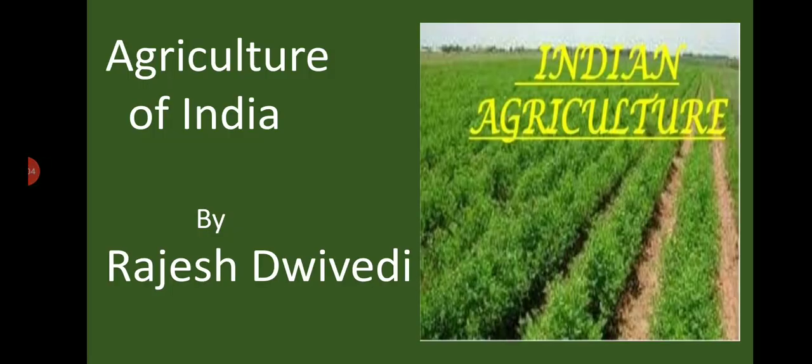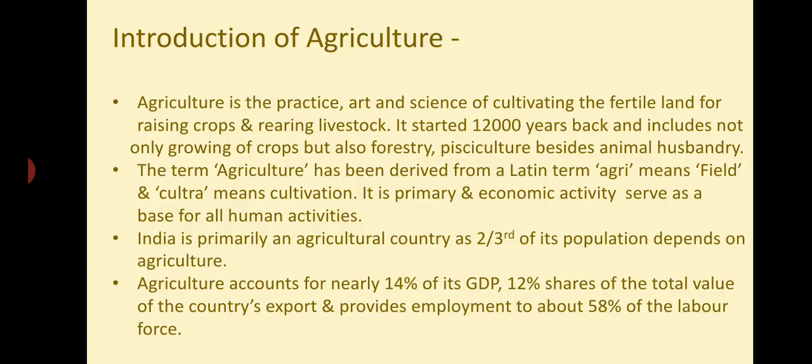Hello children, this is Rajasthivedi and I am here with a new PowerPoint video on Indian agriculture. Agriculture is the practice, art and science of cultivating fertile land for raising crops or rearing livestock. It started about 12,000 years back and includes not only growing of crops but also forestry and animal husbandry. The term has been derived from the Latin word 'agri' meaning field and 'cultura' meaning cultivation.